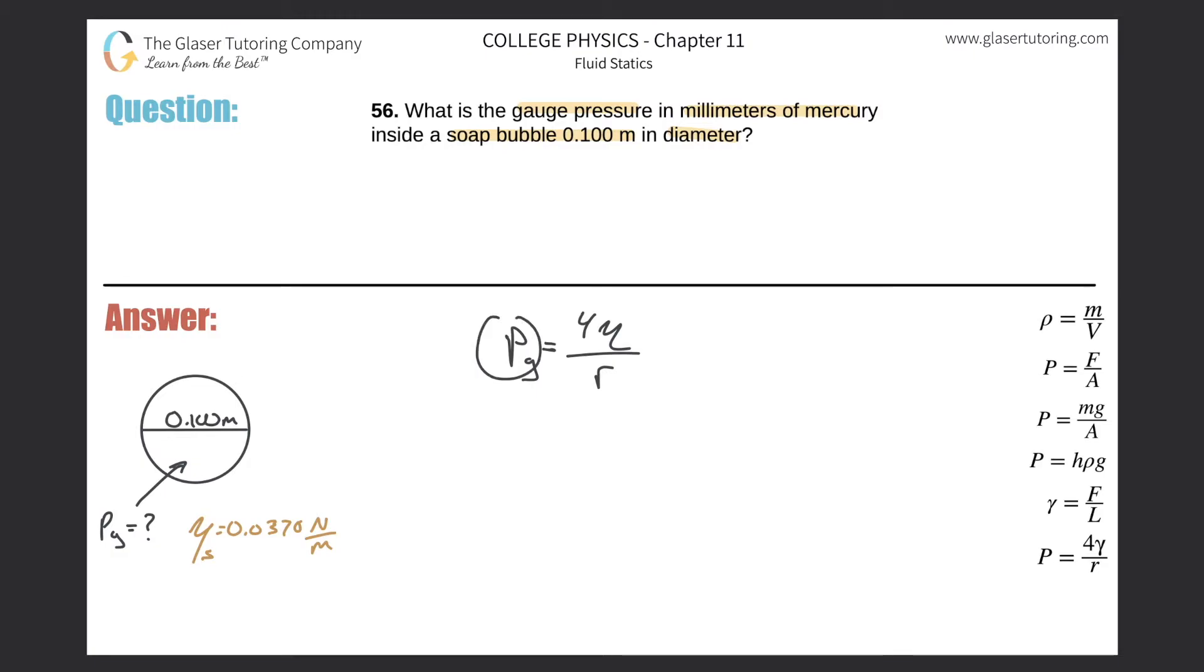So in order to find out the pressure, I need to know two things, the surface tension and the radius. So the surface tension, they told us it was a soap bubble. If you look this up in the table, here is the surface tension of a soap bubble.